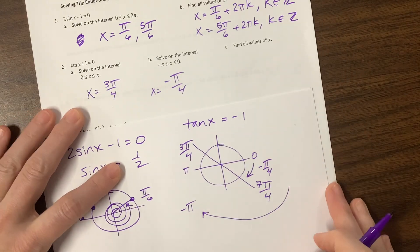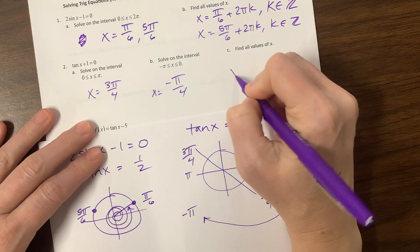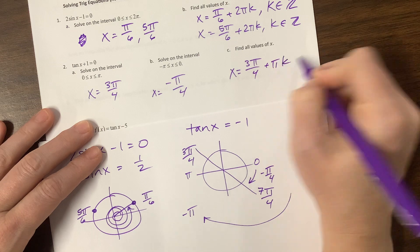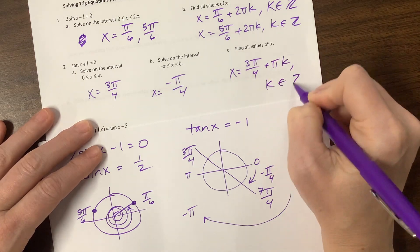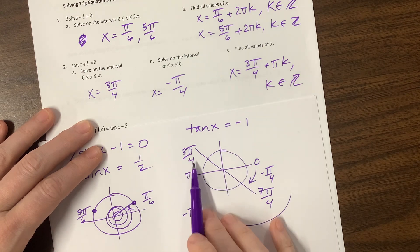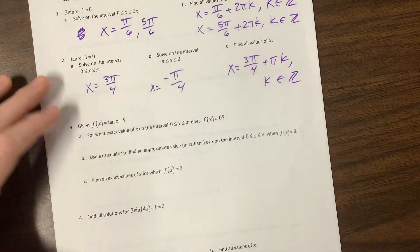Then it says find all values. Well, I'm lazy, I mean efficient. And I'm going to say x is equal to the first positive one, 3π/4 + πk, where k is an element of the integers, because notice they're exactly π units apart.